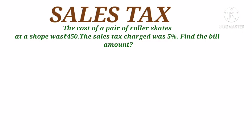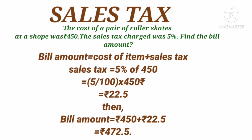Let's see one example. The cost of a pair of roller skates at a shop was rupees 450. The sales tax charged was 5 percentage. Find the bill amount. To get the bill amount we have to add cost of item and sales tax. To get sales tax we have to find 5 percentage of 450, which equals 22.5. Then the final bill amount becomes rupees 450 plus rupees 22.5, which also equals rupees 472.5.